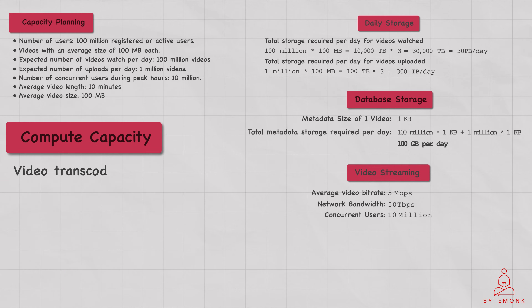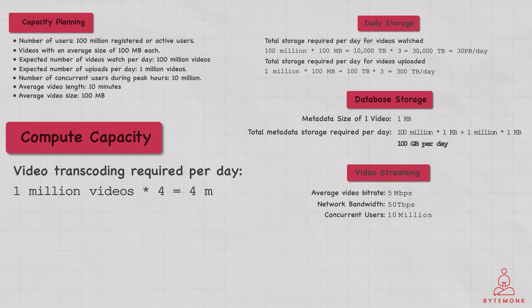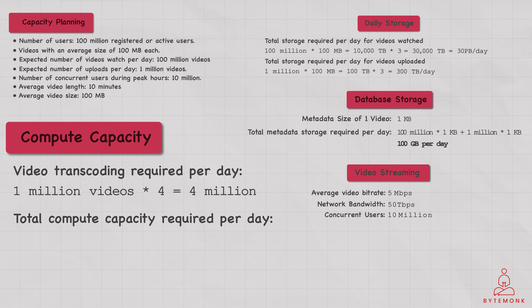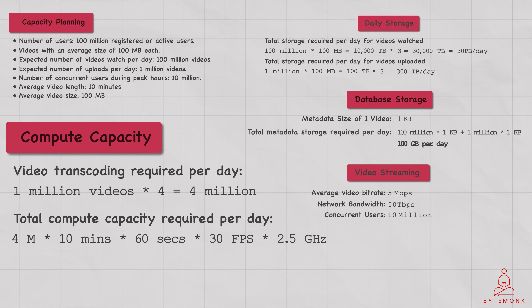Speaking of the numbers, the number of video transcodings required per day would be somewhere around 1 million videos into 4, assuming there are 4 qualities per video, giving us 4 million videos to be transcoded. So the total compute capacity required per day would be 4 million videos into 10 minutes (average video length) into 60 seconds into 30 FPS into 2.5 gigahertz, assuming a 2.5 gigahertz CPU, which comes down to 18 billion gigahertz seconds.